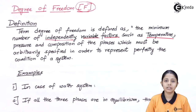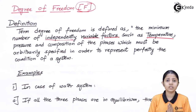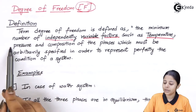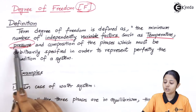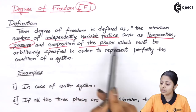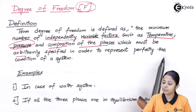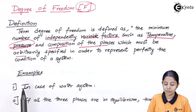For example, temperature is independent on its own — for any component, temperature is independent, and it is also a variable factor, meaning temperature can increase or decrease. Pressure is again an independent variable factor; I can change the pressure of any system to whatever I want. And the composition of the phase must be arbitrarily specified in order to represent the perfect condition of the system.